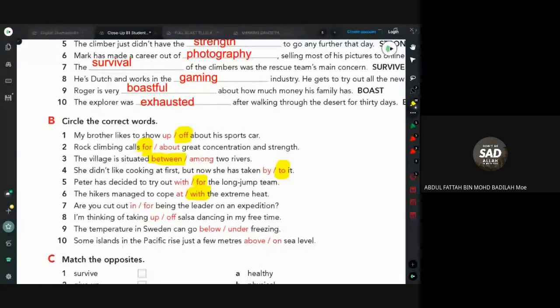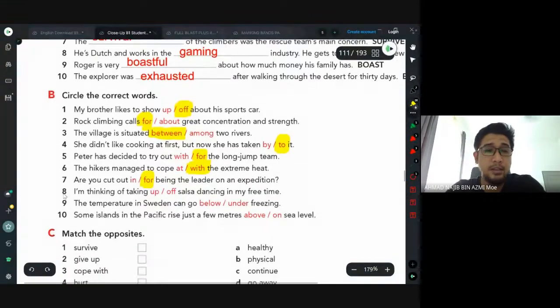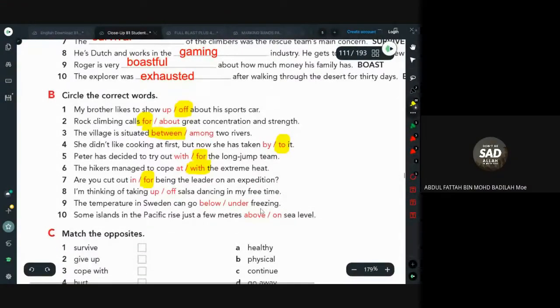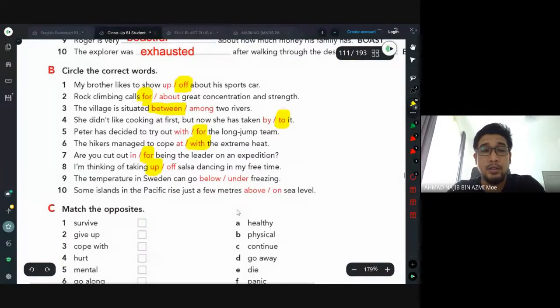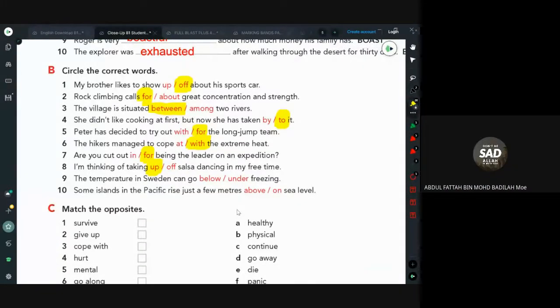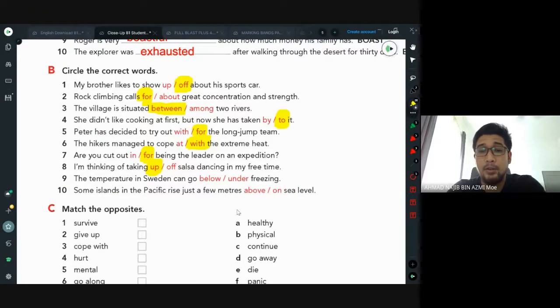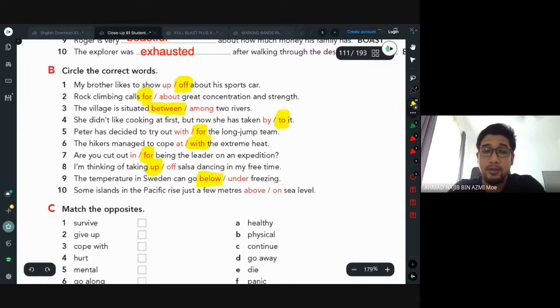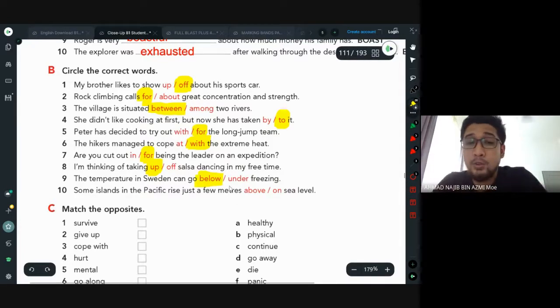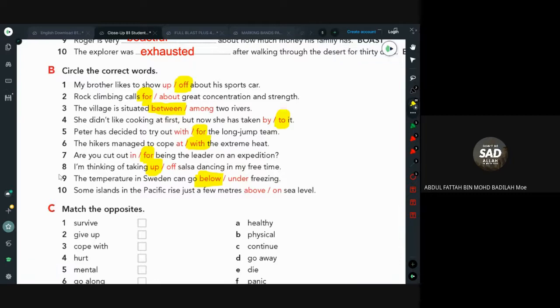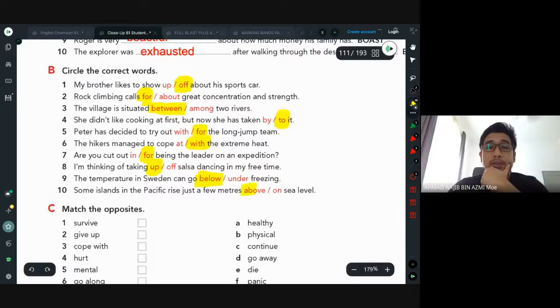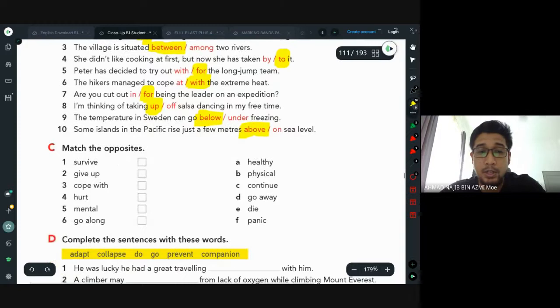Seven: are you cut out for being the leader on an expedition? Cut out for means sesuai, padan. I'm thinking of taking up salsa dancing in my free time. Taking up means start to do something. The temperature in Sweden can go below freezing, not under freezing. Di bawah beku we use below freezing. Then some islands in the Pacific rise just a few meters above sea level.